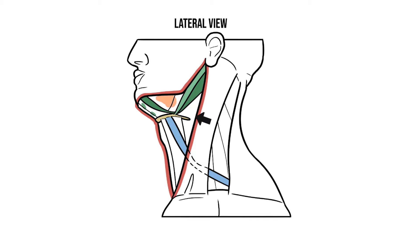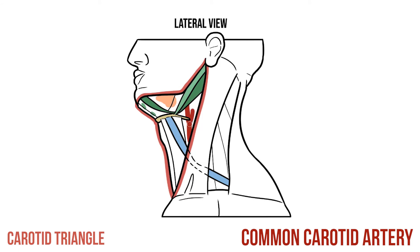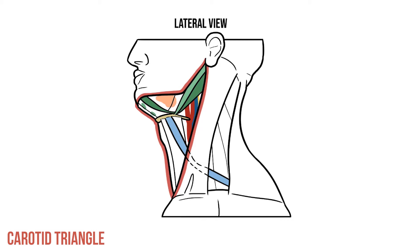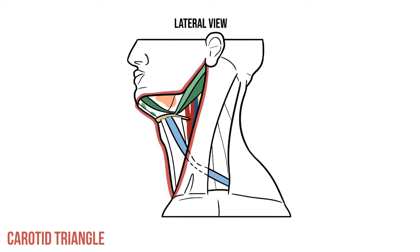The final region of the anterior triangle lies between digastric, omohyoid, and SCM — this is the carotid triangle. As the name suggests, it contains the carotid artery, which divides into internal and external branches just below the level of the hyoid. It also contains the internal jugular vein and vagus nerve, which travel alongside the artery within a fibrous tube known as the carotid sheath. Because these structures are relatively superficial here, the carotid triangle can be a good access point for surgery.